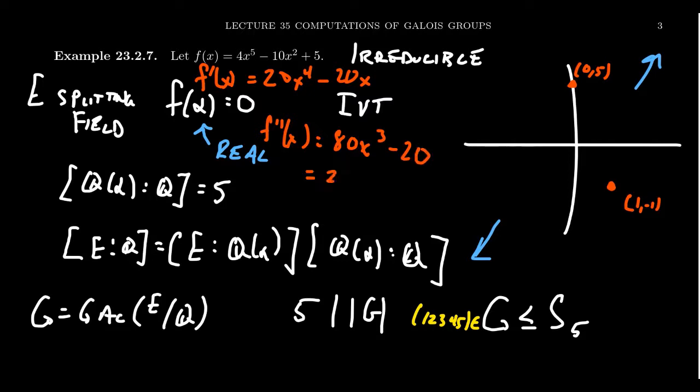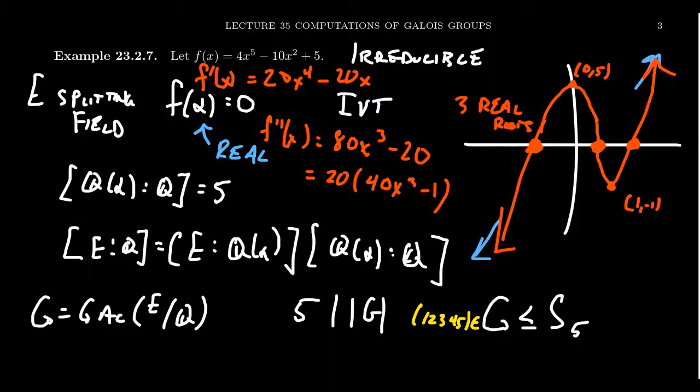If we look at the second derivative, you're going to end up with 80x cubed minus 20. We can factor out 20, that leaves behind 4x cubed minus one. This shows that there's a point of inflection that sits in between these things somewhere. If you plug in zero, you end up with negative 20, so this has to be a local maximum. If you plug in x equals one, you end up with 80 minus 20, which is 60, so at this point you're concave upwards. This is a crude picture, but given this information from the first and second derivative, this graph has to have actually three real roots.